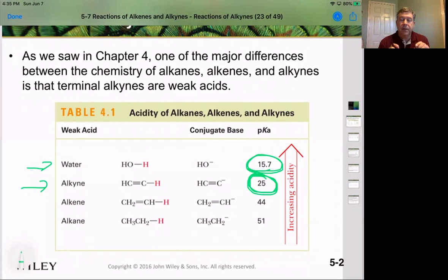If we take that sp hybridized carbon and convert it into an sp2 hybridized carbon, the acidity decreases again. Our pKa jumps up to 44, meaning it's even less acidic than before. If we go from sp2 all the way down to an sp3 hybridized carbon, the acidity drops one more time to one of our least acidic compounds at a pKa of 51, like an alkane.